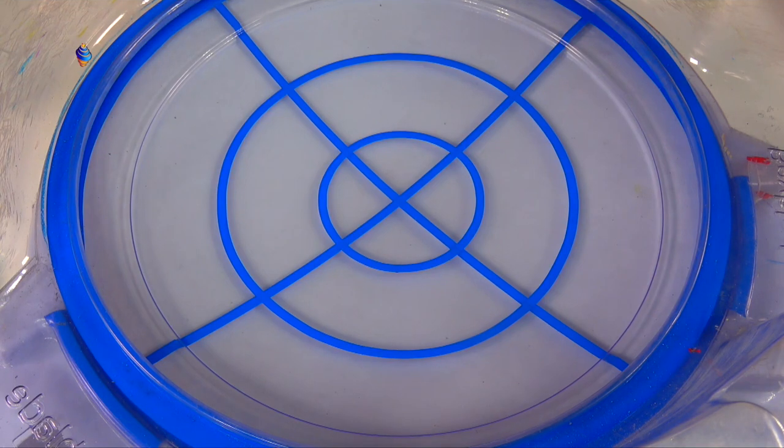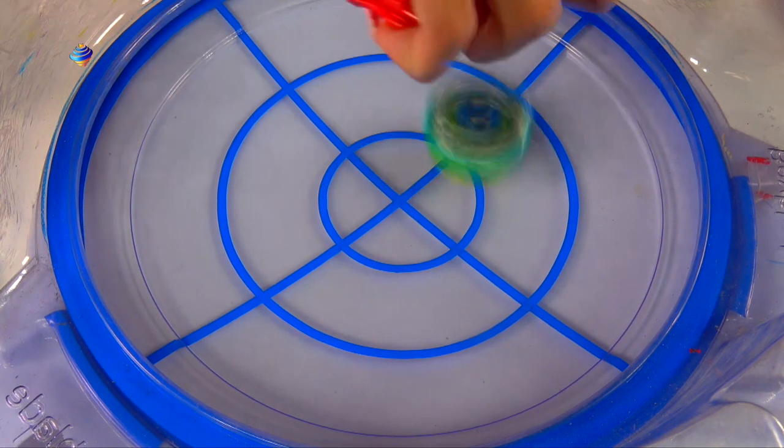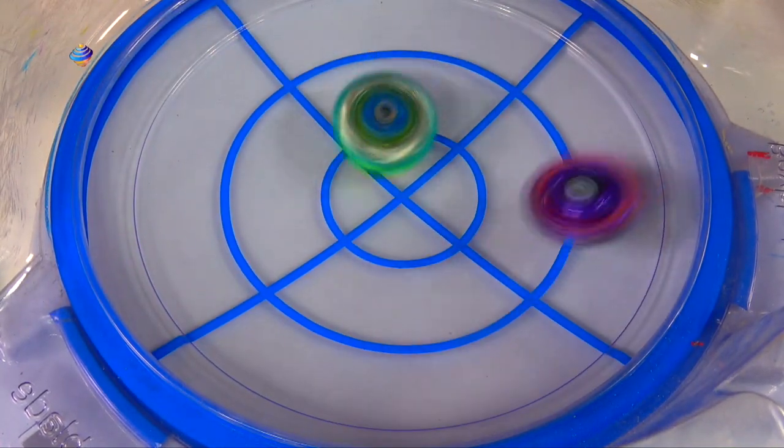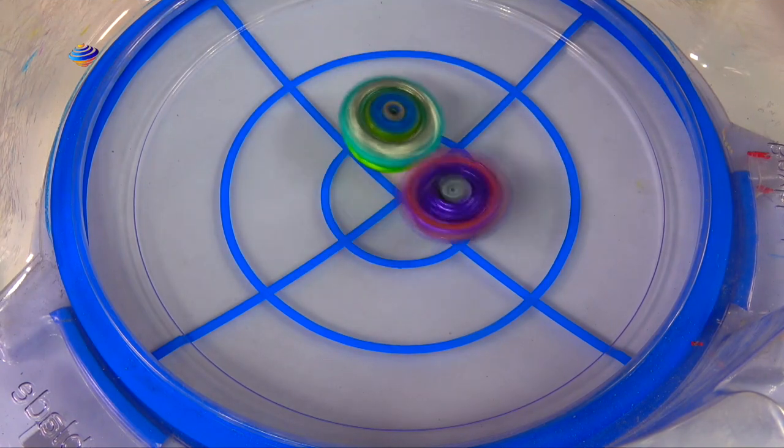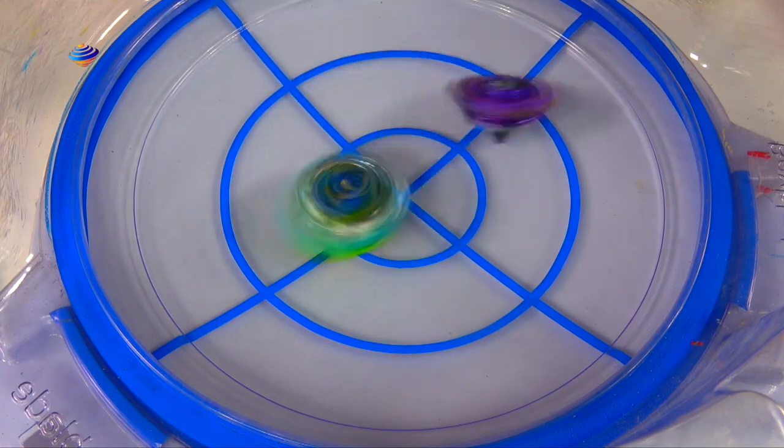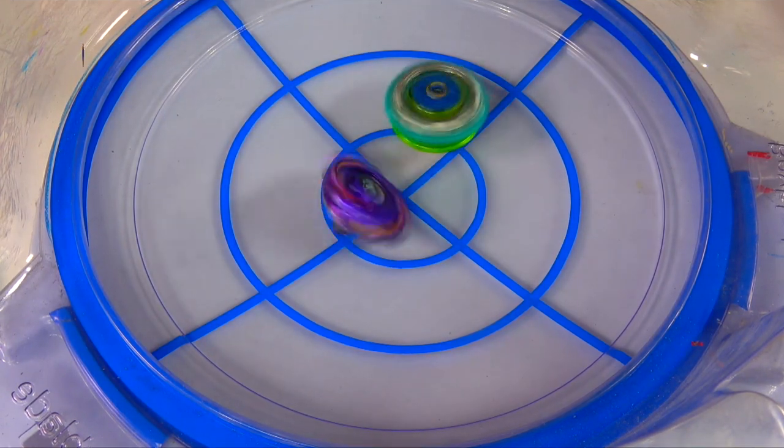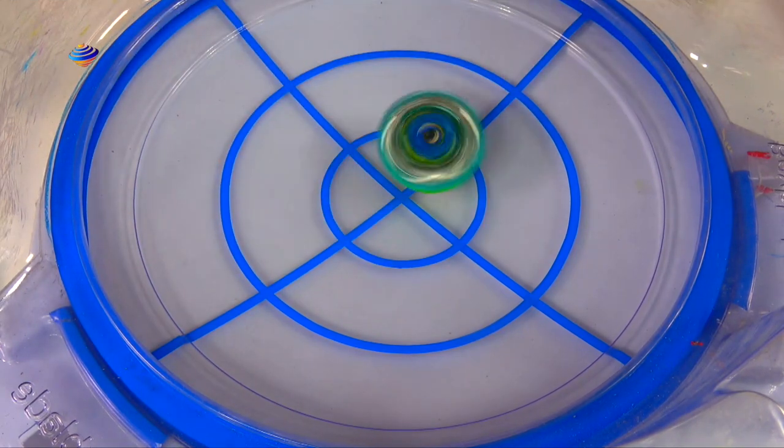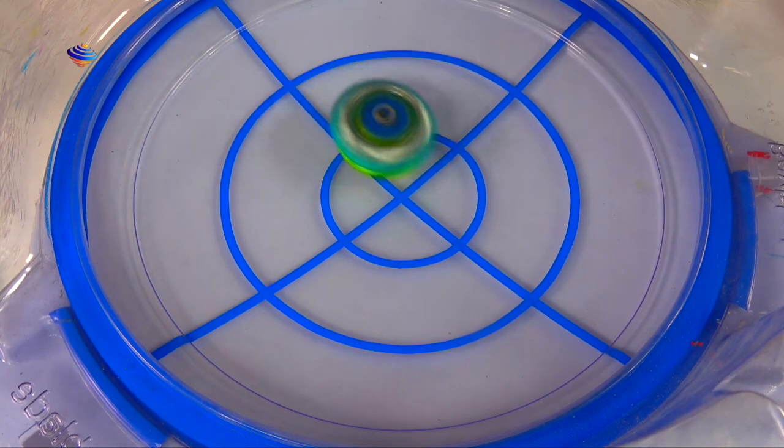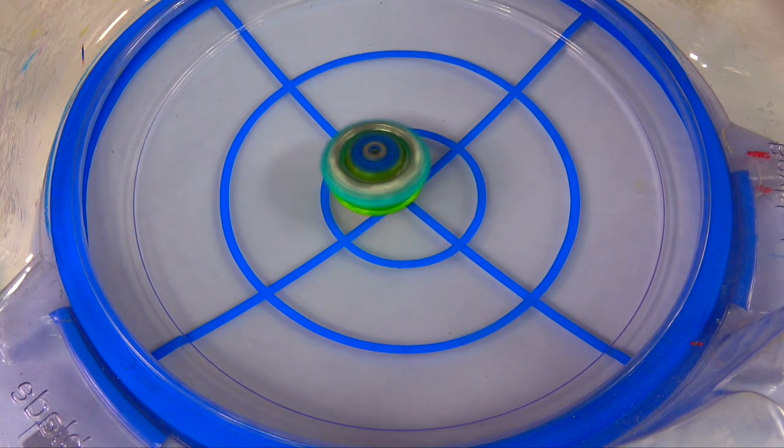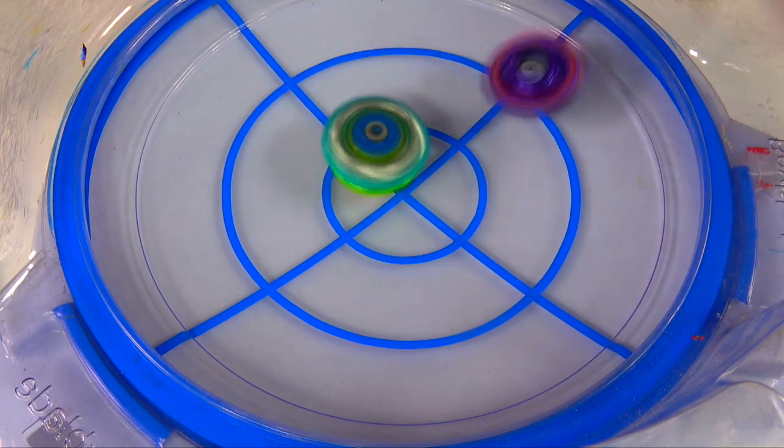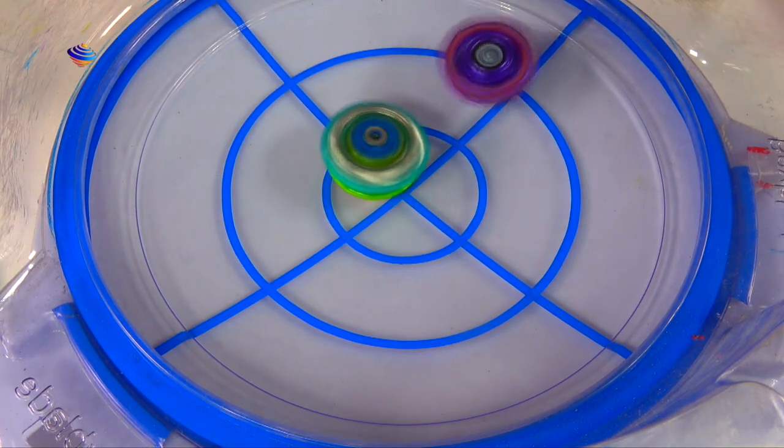So bladers ready and set, three two one go shoot. Three two one go shoot. Yeah it's doing all right. No clicks, obviously with that extreme dash. One click, we'll try that again. So bladers ready and set, three two one go shoot. Probably do one more round after this.